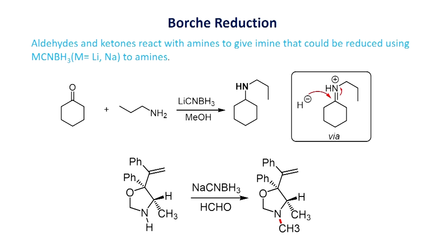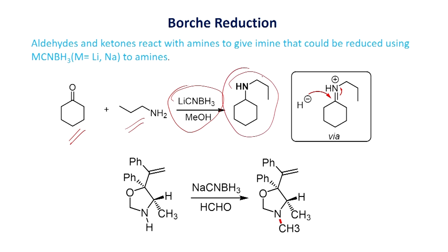So far we have seen that an aldehyde can be readily reacted with ammonia or amine to give an imine; that imine can be reduced into the alkylamine as a product. The next example involves the reaction of cyclohexanone with a primary alkylamine; they react readily to generate the corresponding imine by loss of water. That imine can be reduced using lithium cyanoborohydride in methanol solvent to give N-propylcyclohexylamine as the product.